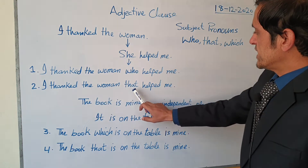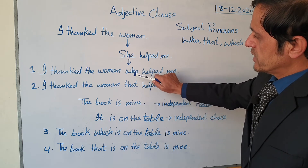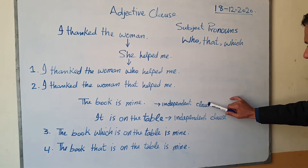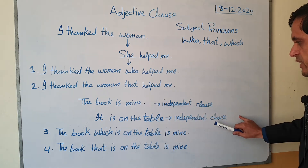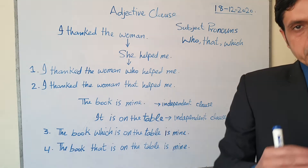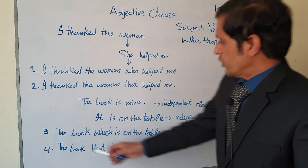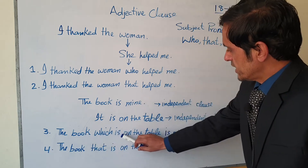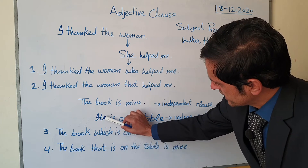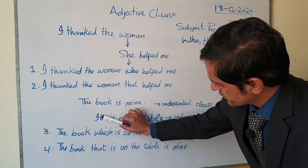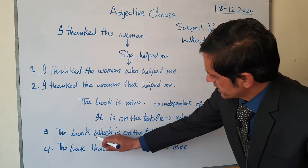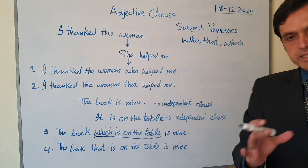We can also use 'that' instead of 'who': 'I thanked the woman that helped me.' Now here is another example: 'The book is mine' — this is one independent clause. 'It is on the table' — this is another independent clause. These two independent clauses will be changed to a complex sentence: 'The book which is on the table is mine.' Here 'which' is used instead of 'it,' and 'which is on the table' is the adjective clause.